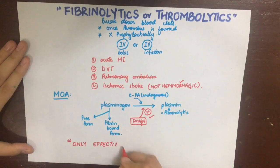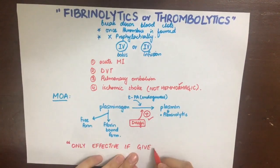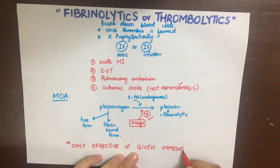We need to remember that plasminogen is of two types: one is the free circulating form and the other is the fibrin-bound form.